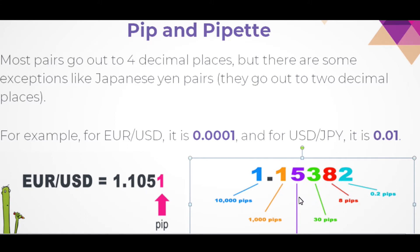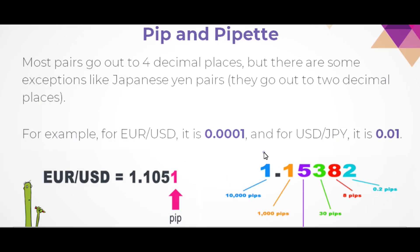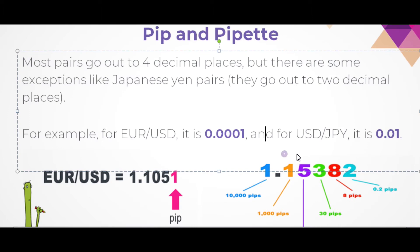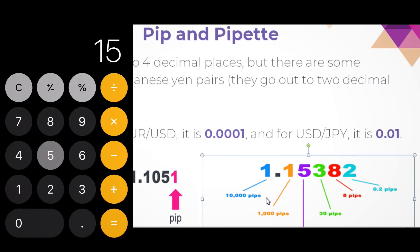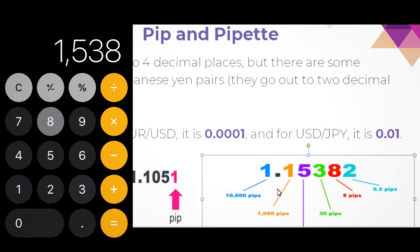We are going to work with the currency pair EURUSD. Our current entry price is 1.1538 — that's the price we want to enter the trade and make some profits. The price then went from 1.1538 to 1.1540.